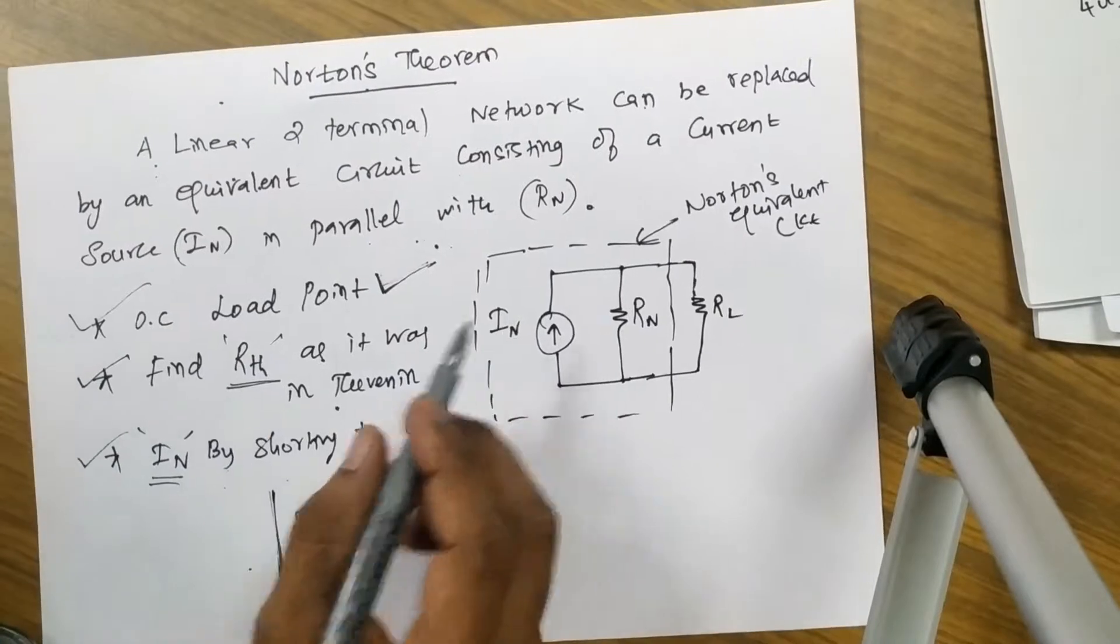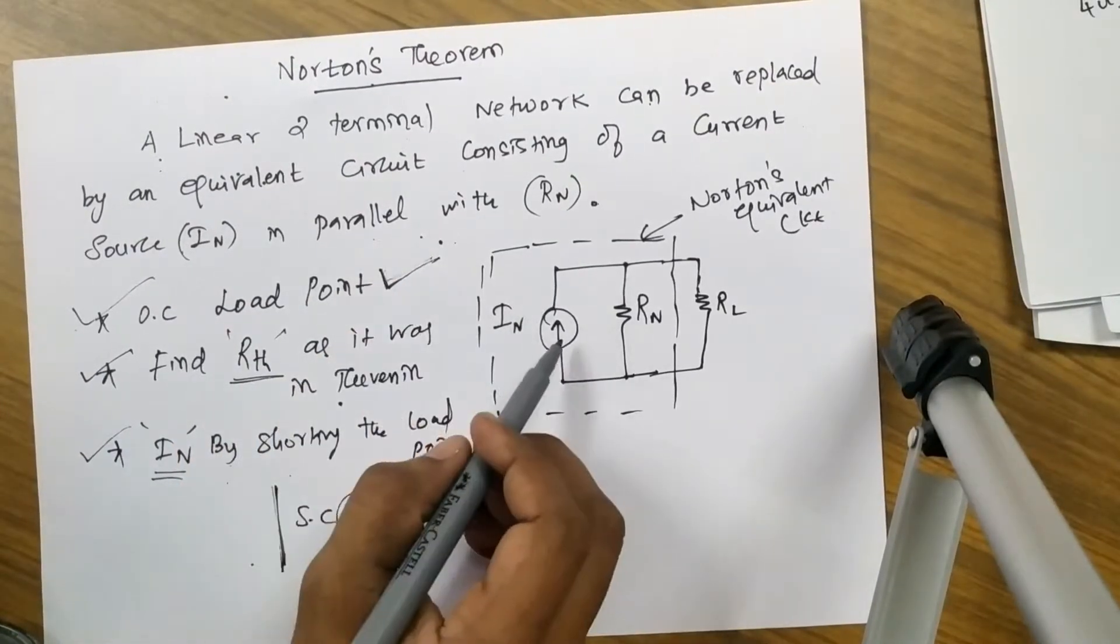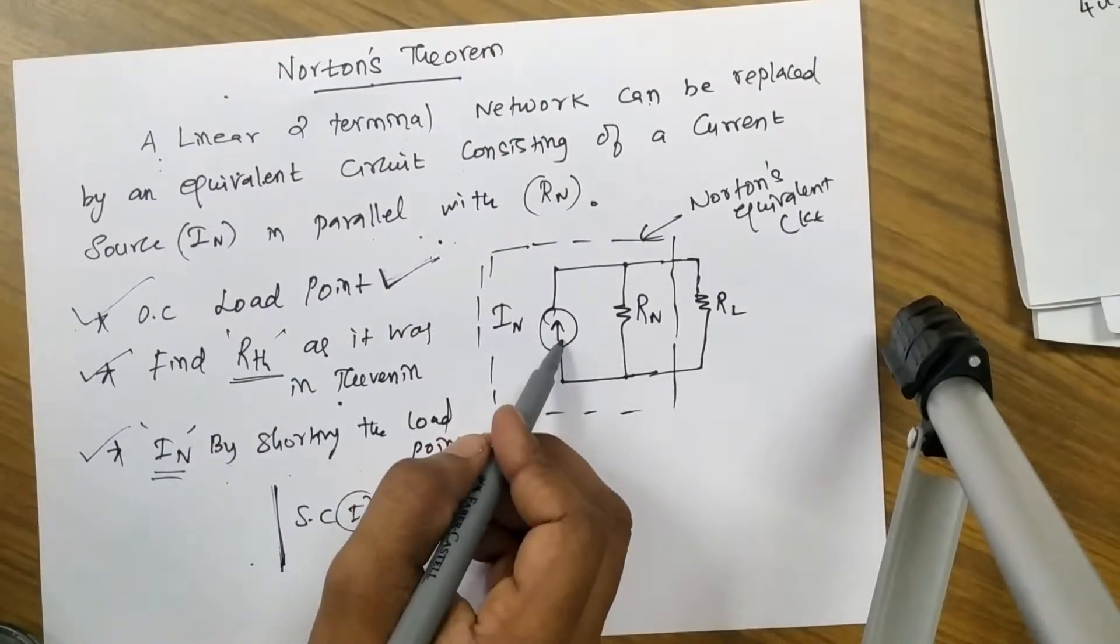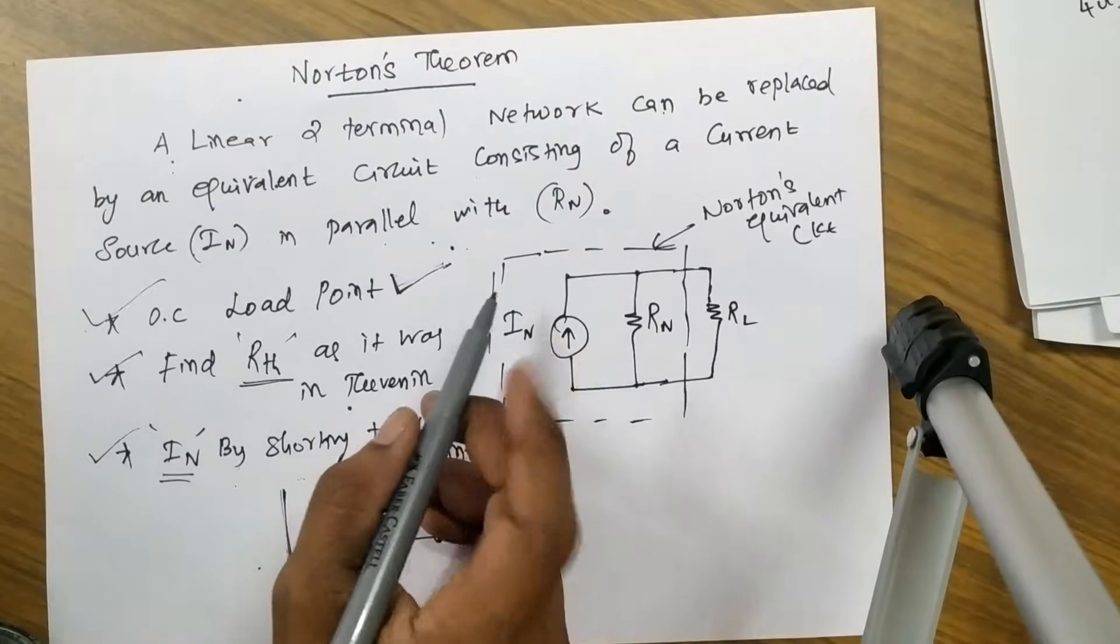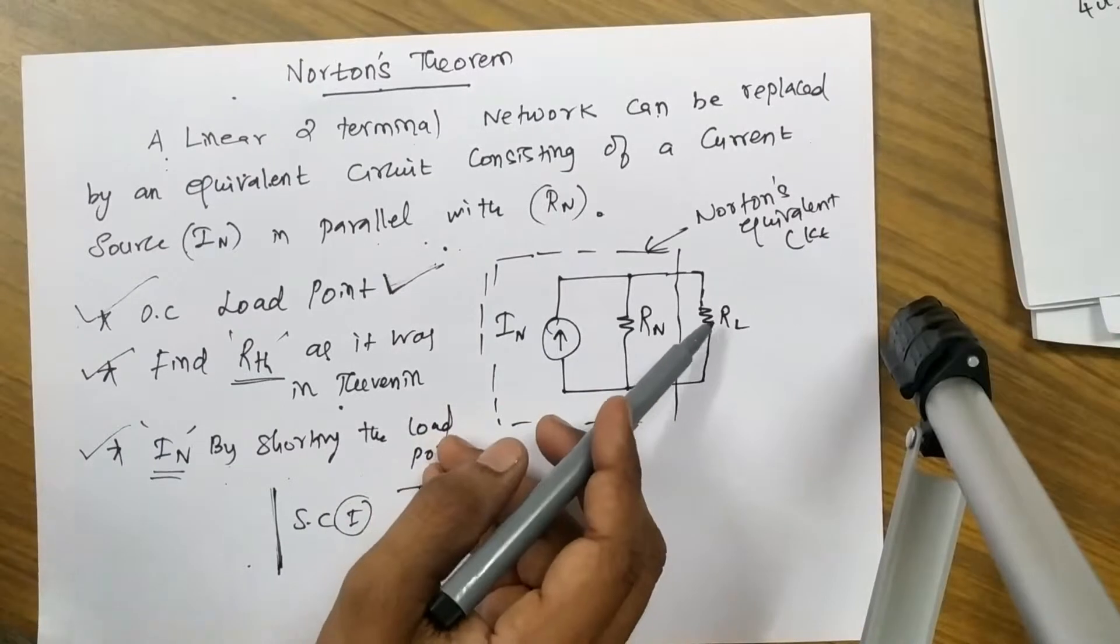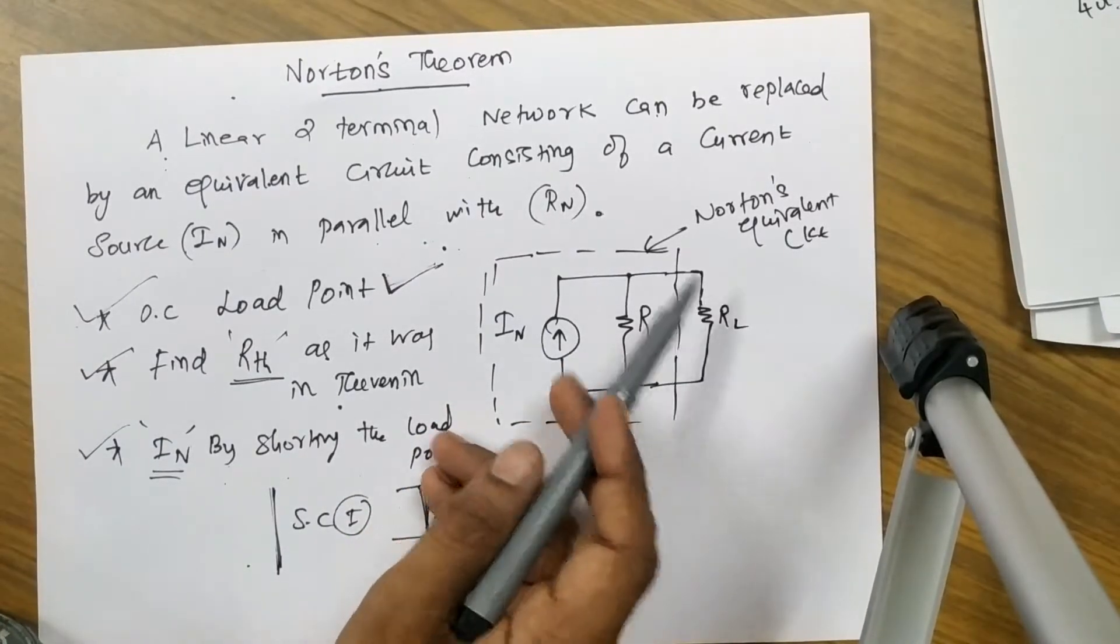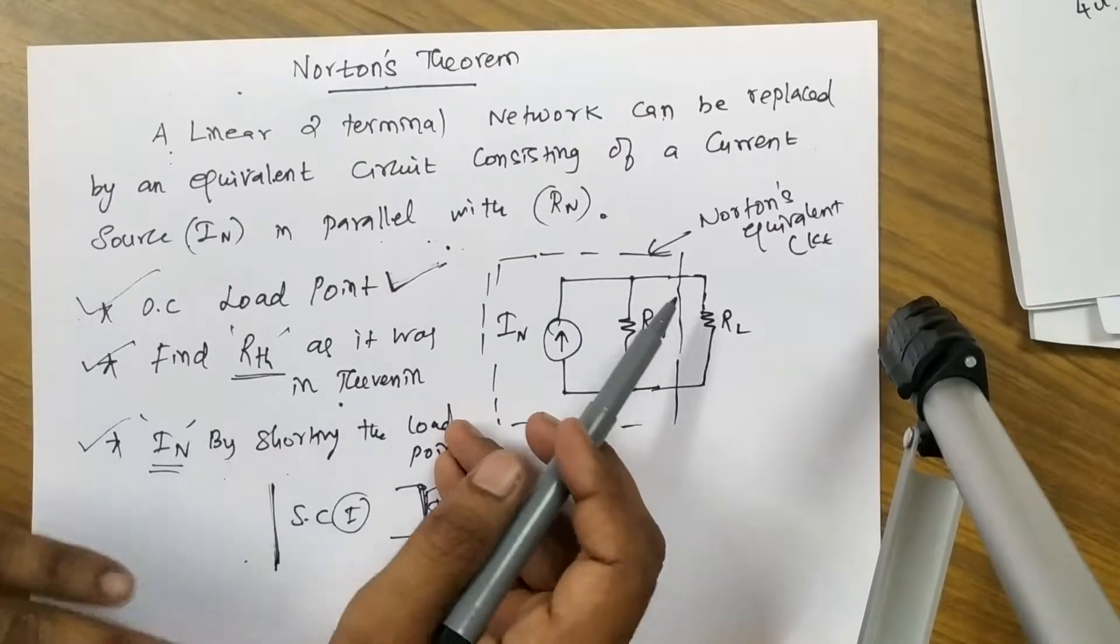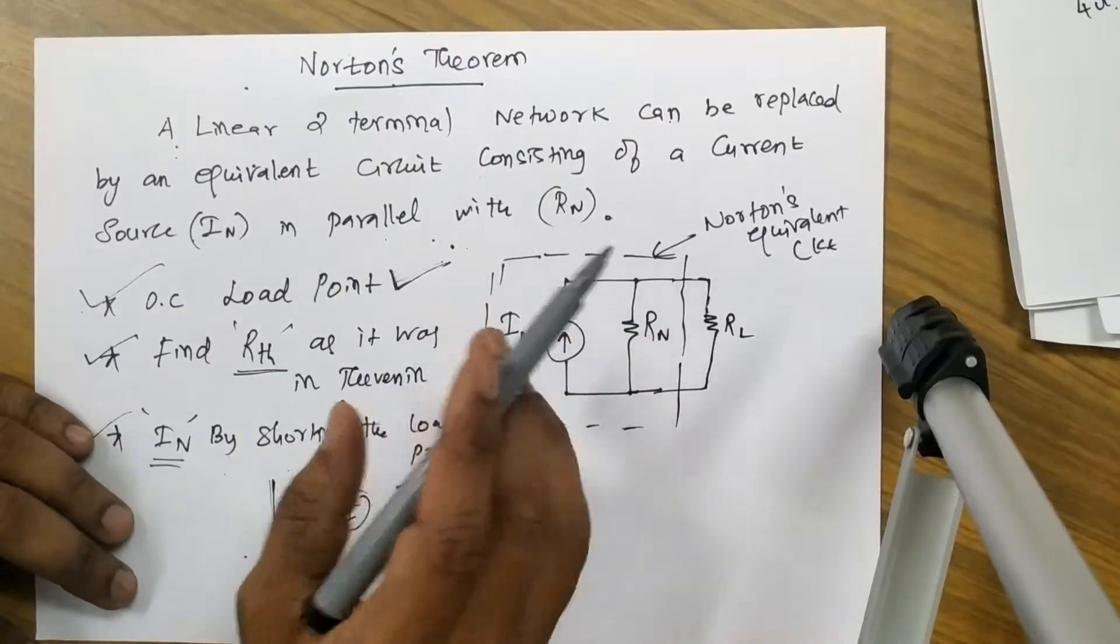In Thevenin's theorem we got voltage source series resistance, here parallel resistance and current source. There the load resistance was connected in series to the equivalent model, here the load resistance is connected parallel to the equivalent model of Norton's theorem, that is the difference between Norton and Thevenin's theorem.